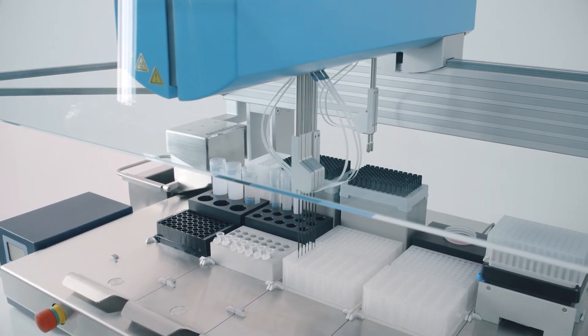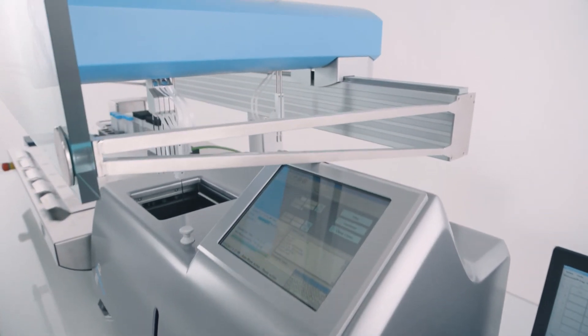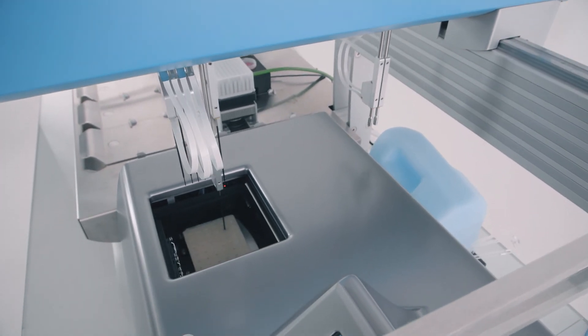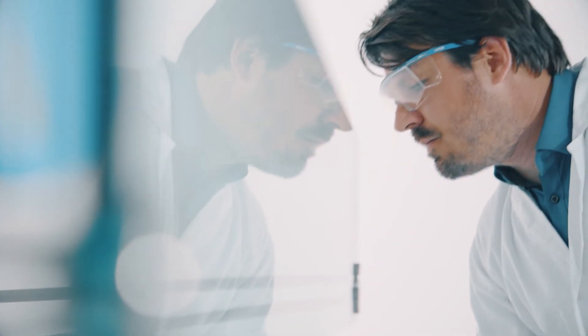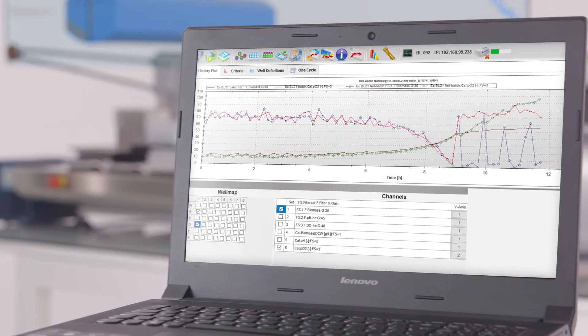The Robolector allows full bioprocess control through the addition of solutions such as inductors, acids, bases, and feed solutions into the Biolector MTP. pH adjustment and fed-batch triggers can be elicited by predefined time schedules or online process signals.